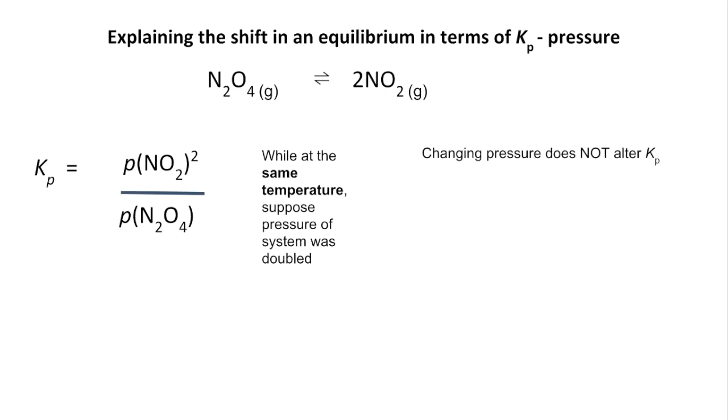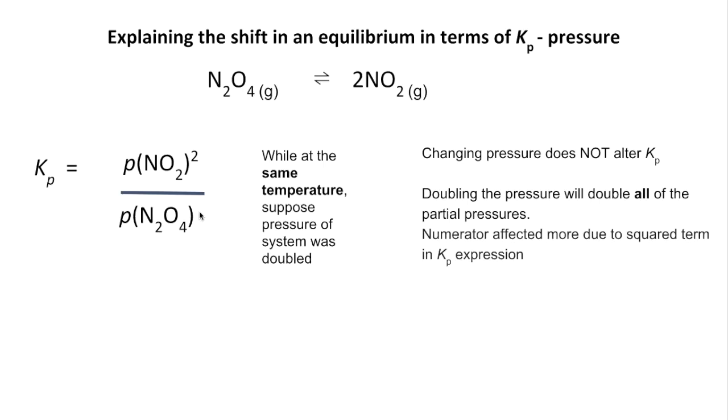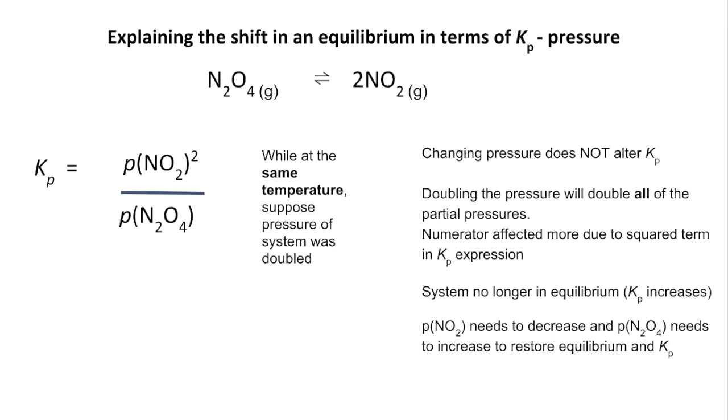So the first thing to say is changing the pressure doesn't alter Kp. So we've got to have the same Kp at the end of the pressure change. Now doubling the pressure will double the pressure of everything, so all those partial pressures are going to double. And you can see in the Kp expression, we've got a squared term on the top, but we've only got power one on the bottom. So the numerator term is going to be affected more because of that squared term. So that's going to effectively knock the system out of equilibrium. Kp will increase because the top of this is affected more than the bottom. And so the equilibrium position needs to shift to bring Kp back to its original value. So how does it do that? Well, the partial pressure of NO2 needs to decrease and the partial pressure of N2O4 needs to increase. So if that decreases and that increases, it's going to bring Kp back down to where it was. So the equilibrium does that by shifting to the left.